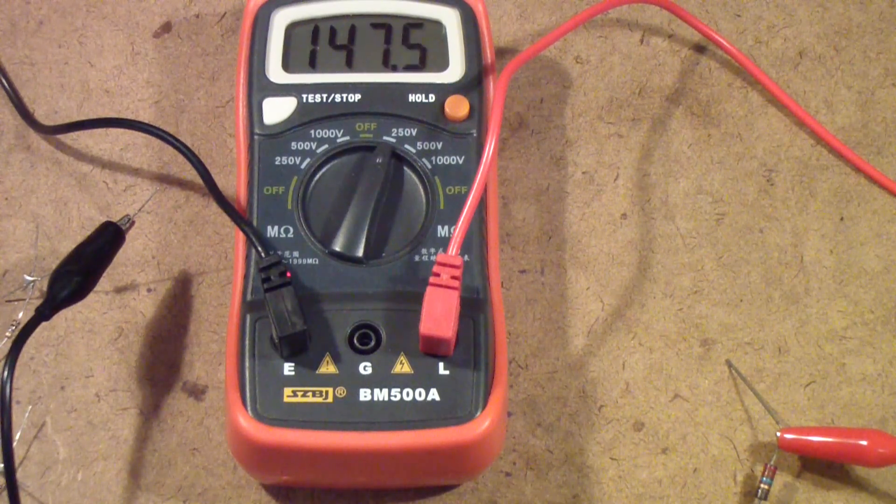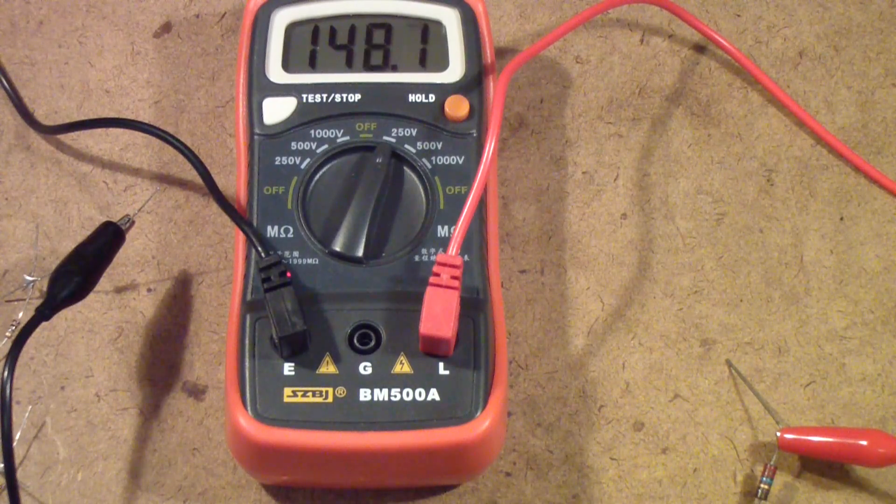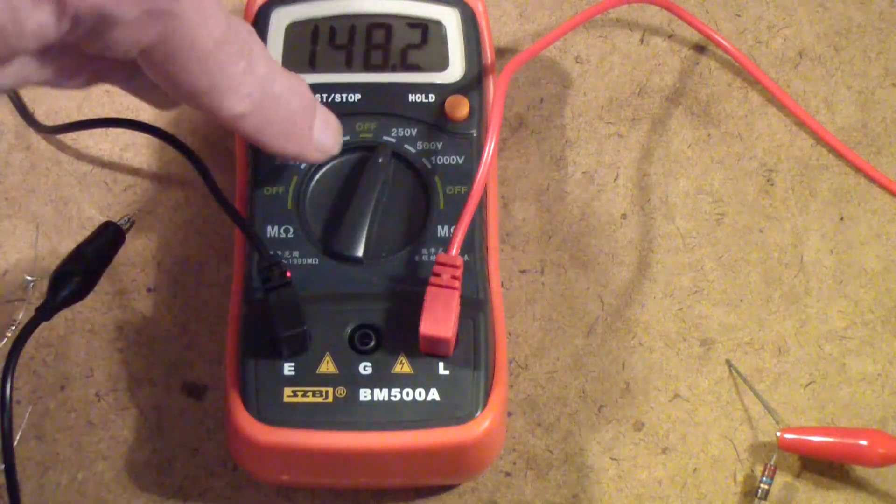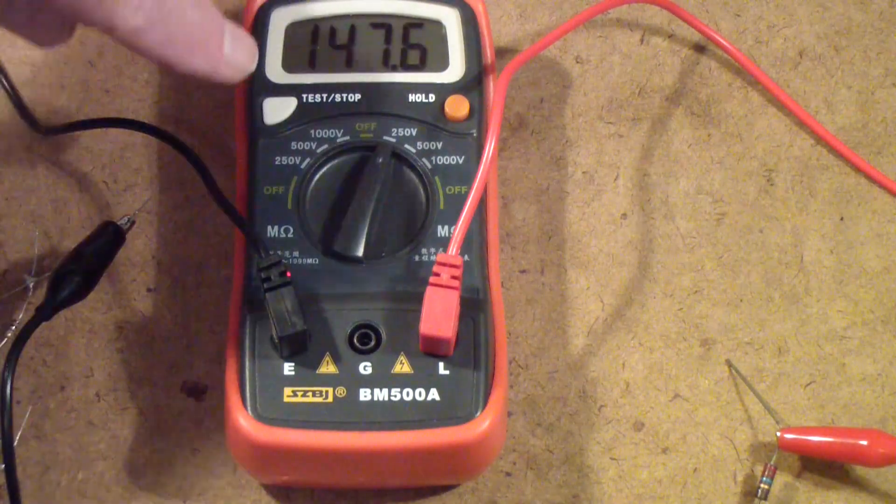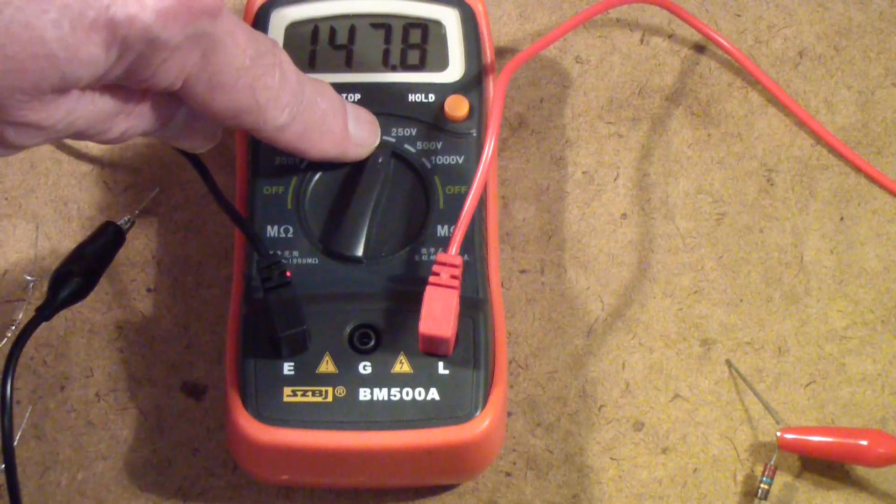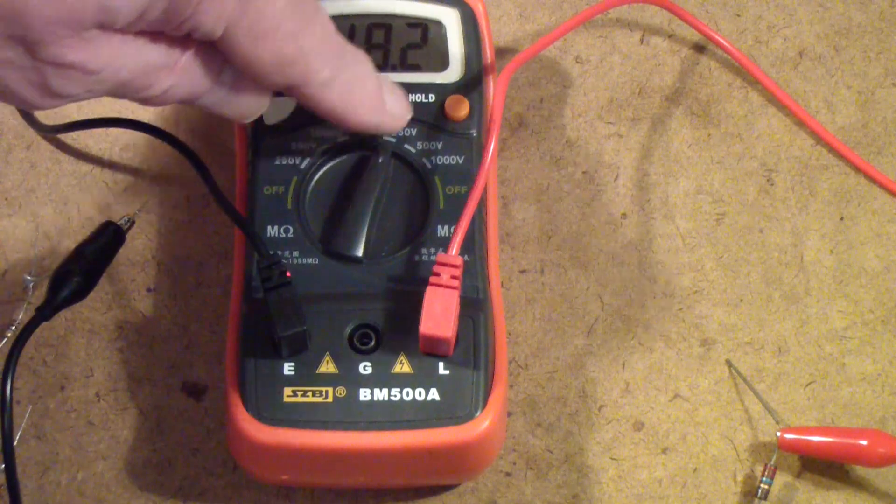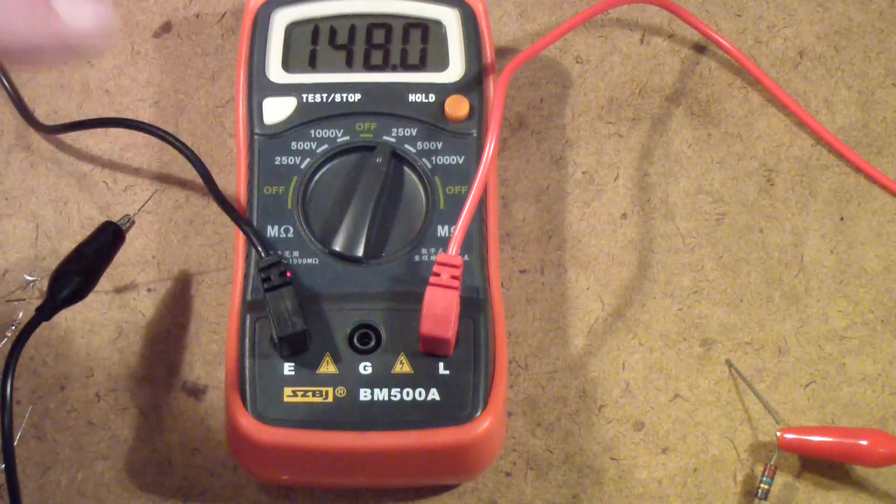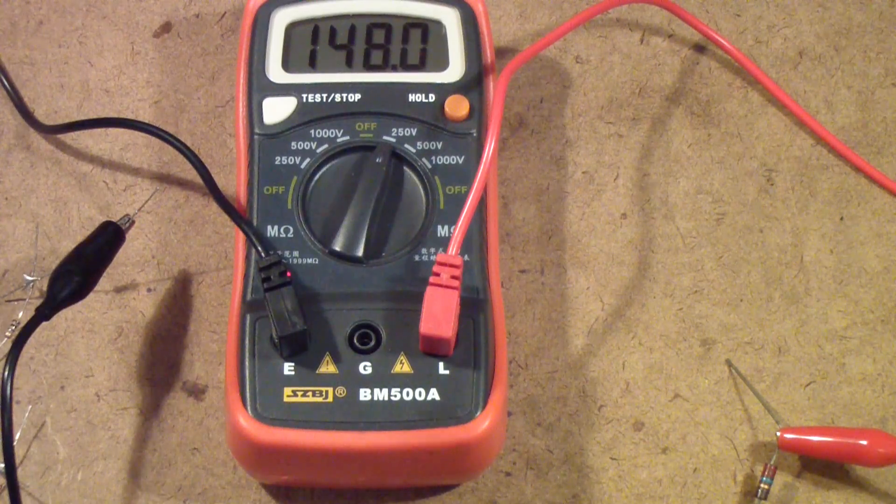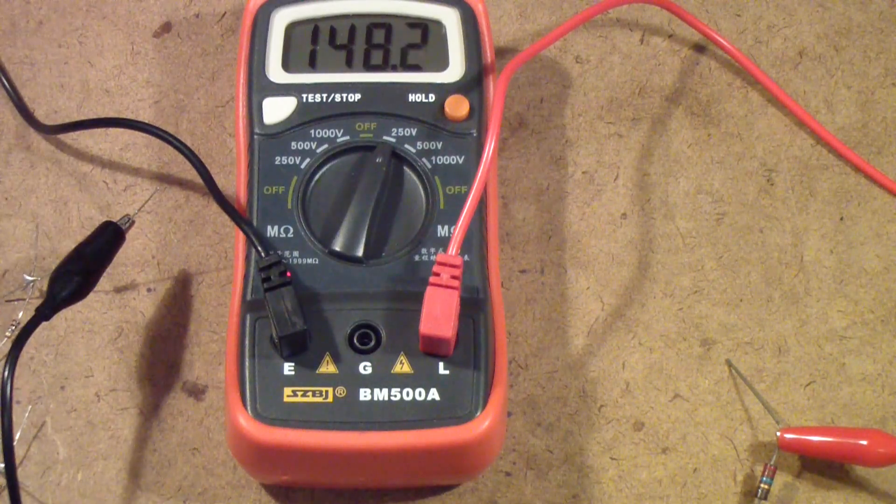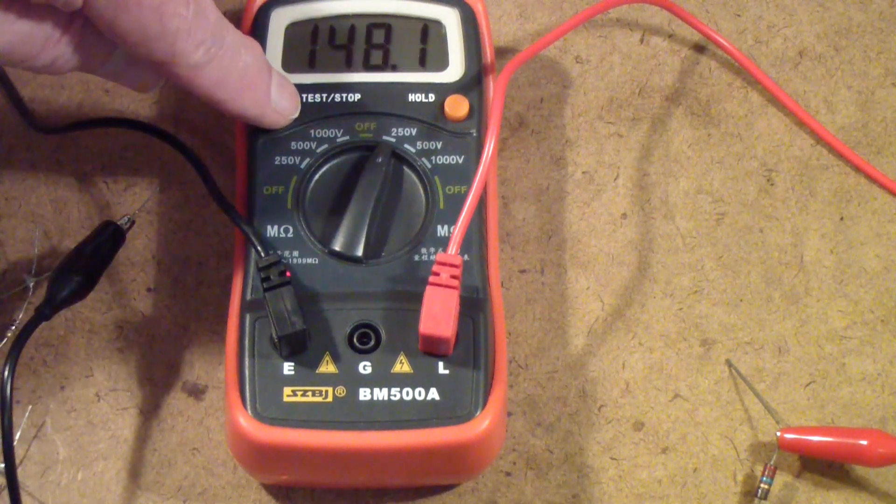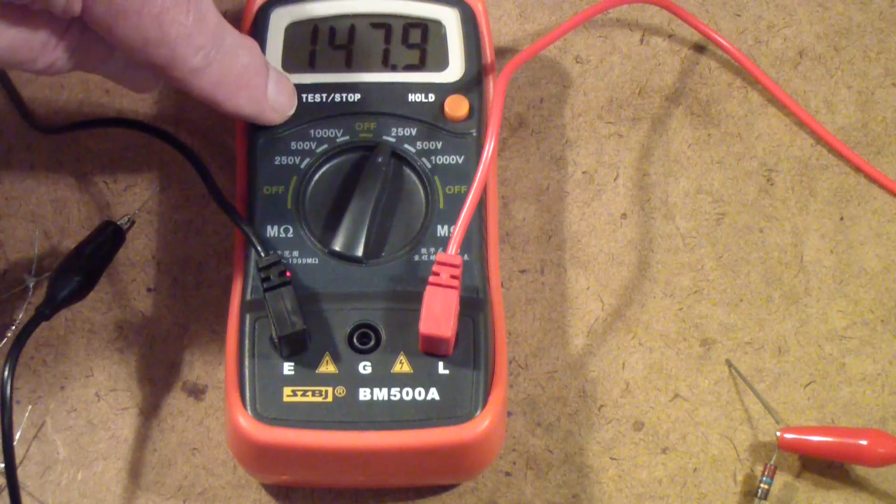Now, of course, that first meter I showed you, the one in the blue case, won't go anywhere near that high. One of the nice things about the BM500 is it will let you test very high resistances with the meter in the 250 volt or 500 volt position, as I'll show you a little later. You can't do that on the VC60B. It only will test the very high resistances if you apply a full 1000 volts. So let's turn this off now and put a different resistor on this meter.